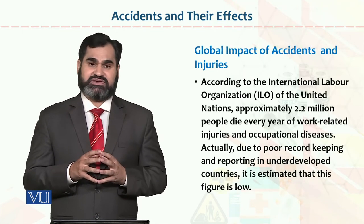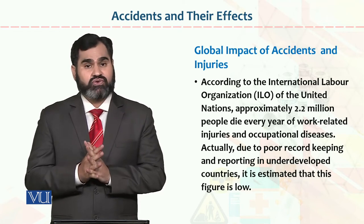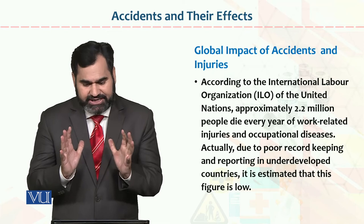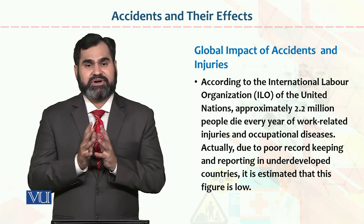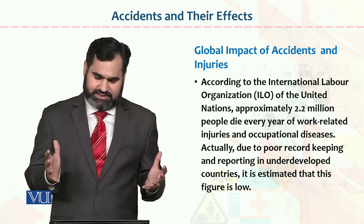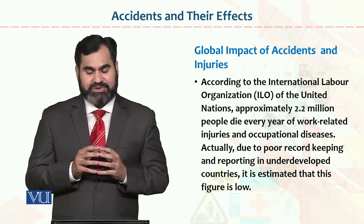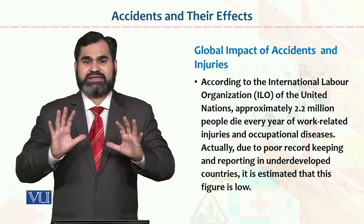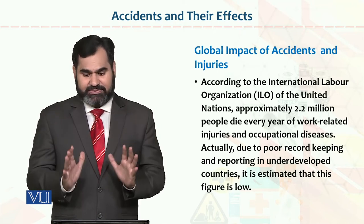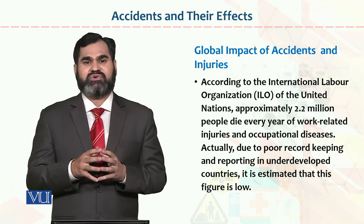Global impact of accidents and injuries: according to the International Labour Organization of the United Nations, approximately 2.2 million people — about 22 lakh workers — die every year due to work-related injuries or occupational disease. This is ILO data. However, due to poor record keeping and reporting in underdeveloped countries, it is estimated that this figure is actually low. The actual percentage is likely higher, but because cases are not reported, that data is not captured here.